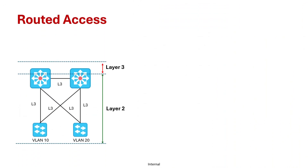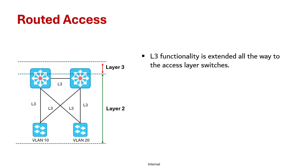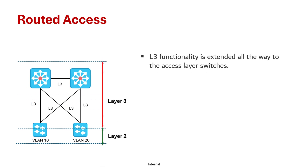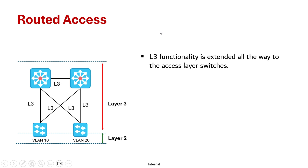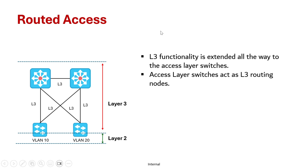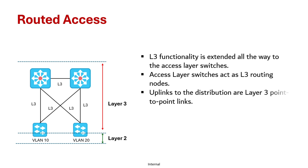So what is routed access? A routed access is a design where Layer 3 functionality is extended all the way to the access layer switch. Here, the access layer switches act as full Layer 3 switches capable of both Layer 2 and Layer 3 functionalities, and the uplinks to the distribution layer and between the distribution switches are Layer 3 point-to-point routed links instead of Layer 2 trunks.